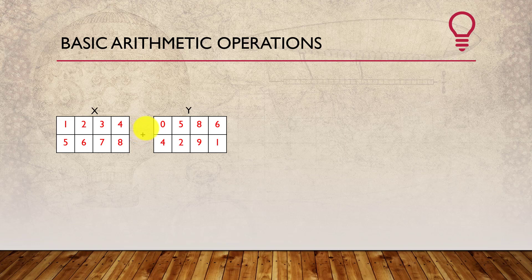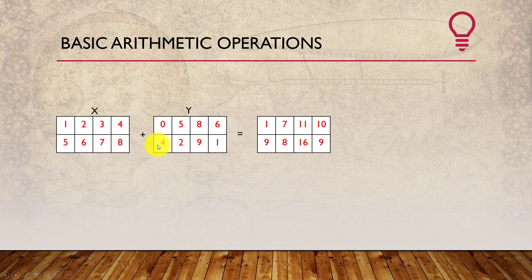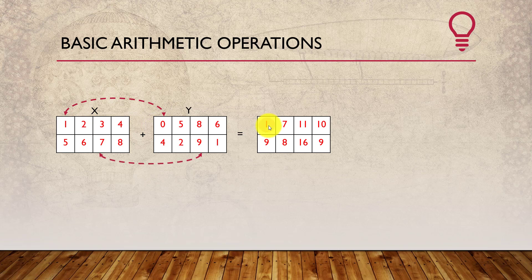Let's say I want to do x plus y. It will produce another 2D tensor. Each element comes from corresponding elements: for example, 1 plus 0 equals 1, and 7 plus 9 equals 16. So I think you get the idea of what element-wise operation means.